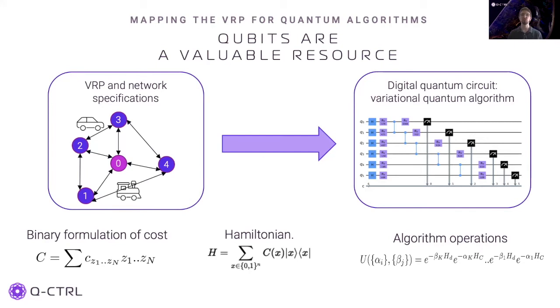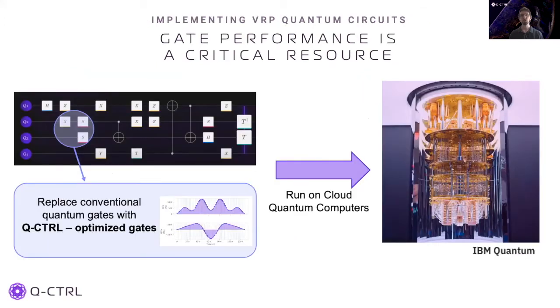One key note here is that current hardware is limited in the number of available qubits. This means that mappings for near-term implementation should minimize the number of required qubits, unlike the classical algorithms. When it comes to implementing quantum circuits on real hardware, the performance of the gates is a critical resource. The gate performance constrains the performance of the algorithm as a whole, and the quality of the optimization results thus directly depend on the gate performance.